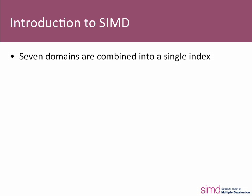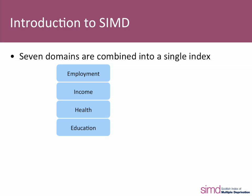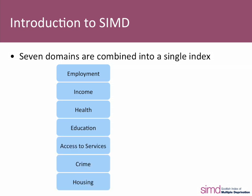The seven domains are employment, income, health, education, access to services, crime and housing.